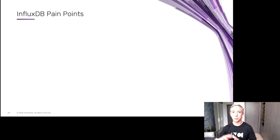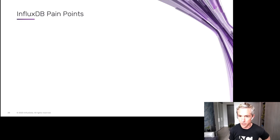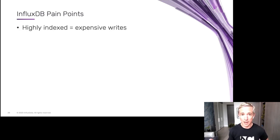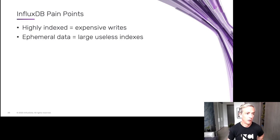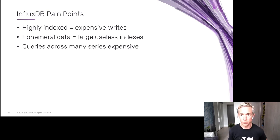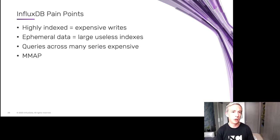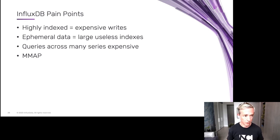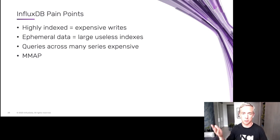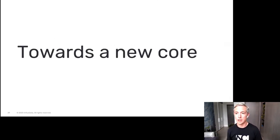Within InfluxDB and our previous design, we had specific pain points we wanted to resolve. First, it's highly indexed — we over-index, which means writes get very expensive over time. A lot of these indexes are ephemeral and completely unused. Queries across many series are expensive. InfluxDB also uses mmap pretty extensively, and what we found is that's difficult to operate within a containerized environment in the way we want. Once you get to the idea that we have to change the underlying structure and get rid of mmap, it basically points us toward creating a new core of the database.